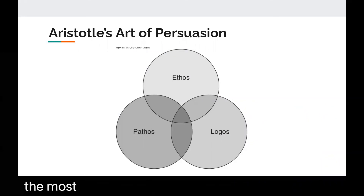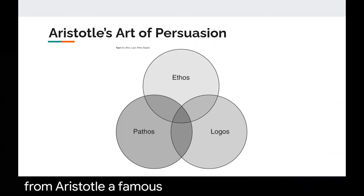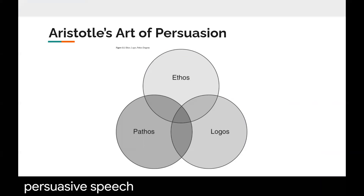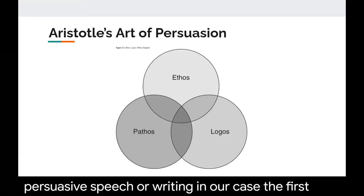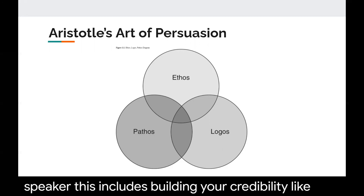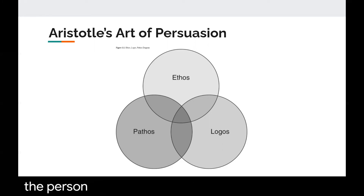One of the most widely used forms of persuasion comes from Aristotle, a famous philosopher, and his art of persuasion talks about three distinct qualities of persuasive speech or writing in our case. The first is ethos, and ethos talks about the qualities of the speaker. This includes building your credibility, likability, all of the things that involve a speaker and the person sharing the message.